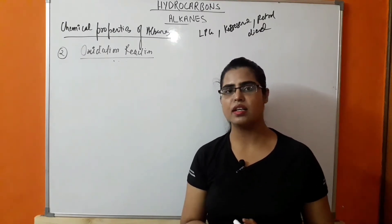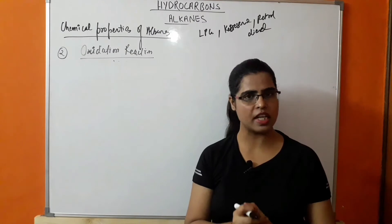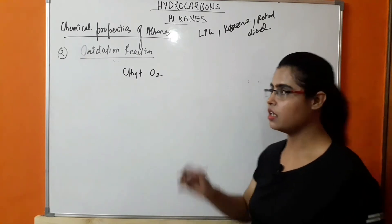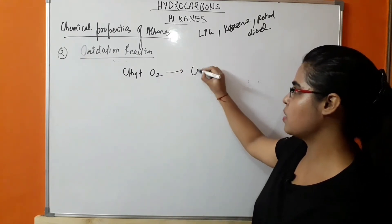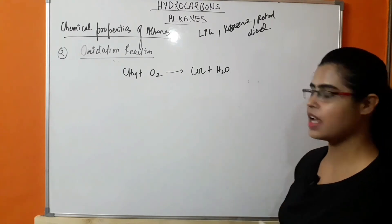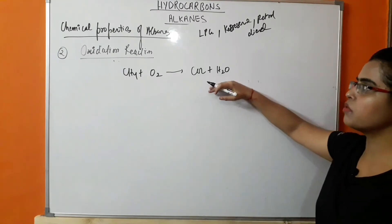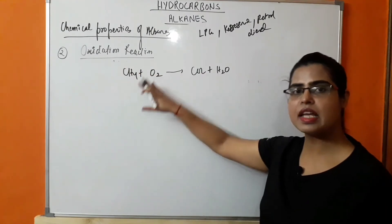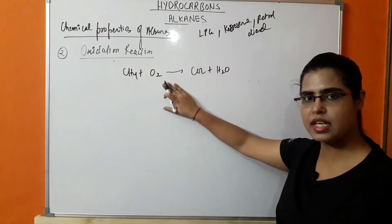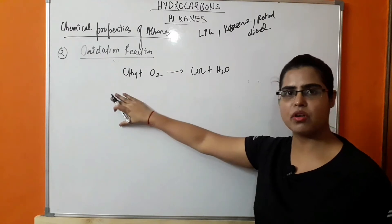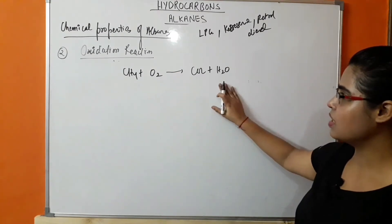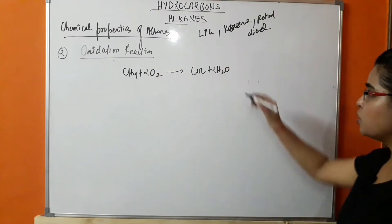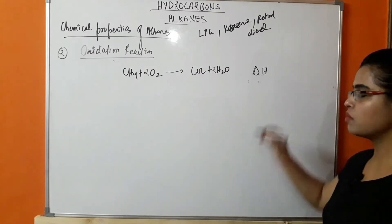Alkanes are used as fuel because in complete combustion they liberate a large amount of heat. For example, CH4 when heated in excess supply of air undergoes complete combustion, forming CO2 and H2O. Whenever CO2 and H2O are formed, it means the hydrocarbon is completely combusting in the presence of oxygen. You have to balance the reaction according to the number of carbons present in the alkane — in this case, 2 water molecules are released.